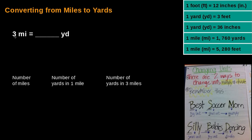Let's look at an example. We need to convert three miles to yards — how many yards can you find in three miles? The first thing you need to do is have the units and their relationships written down. Then look for the relationship between miles and yards, which is right here: one mile equals 1760 yards.